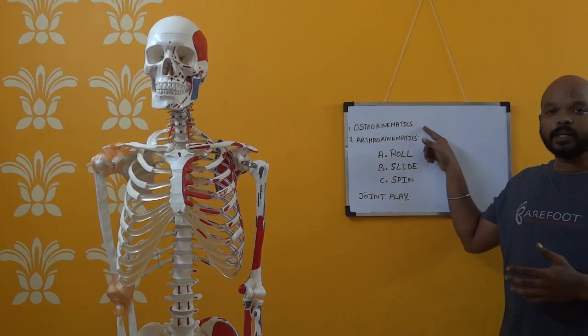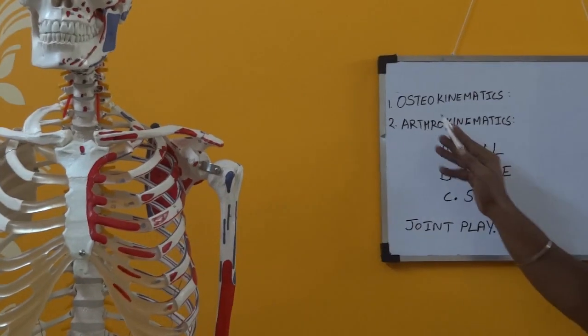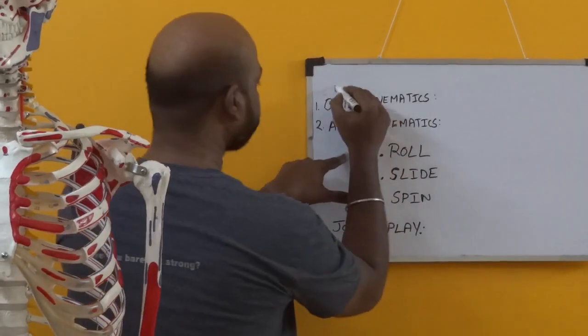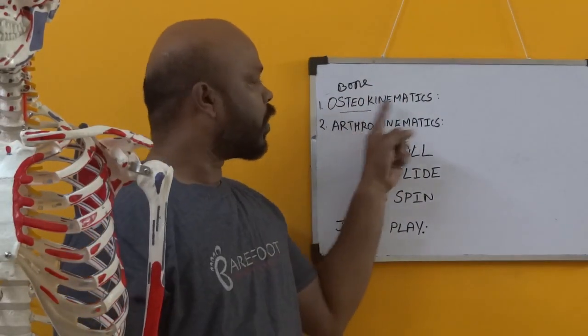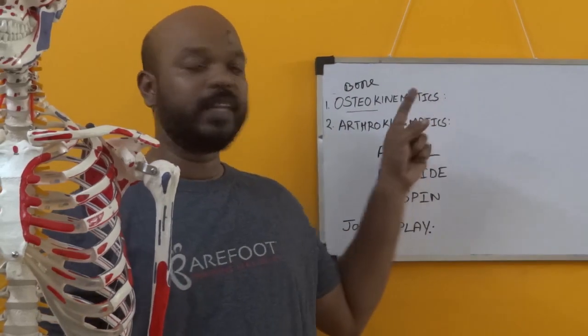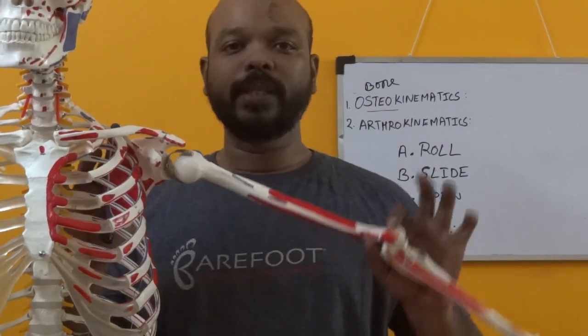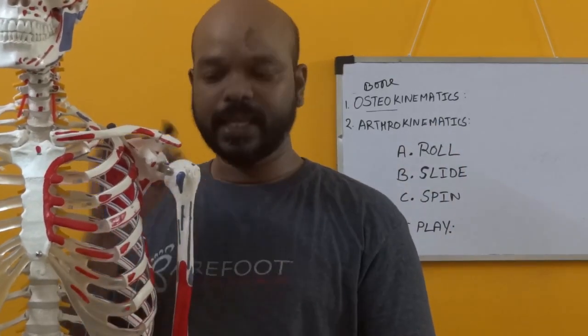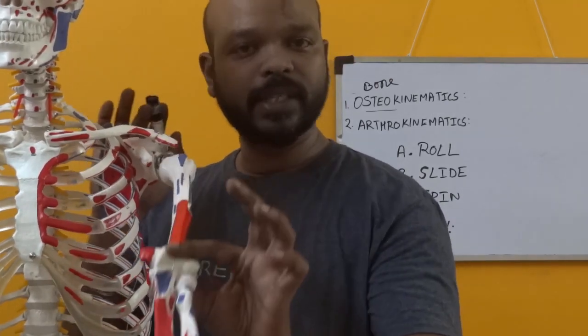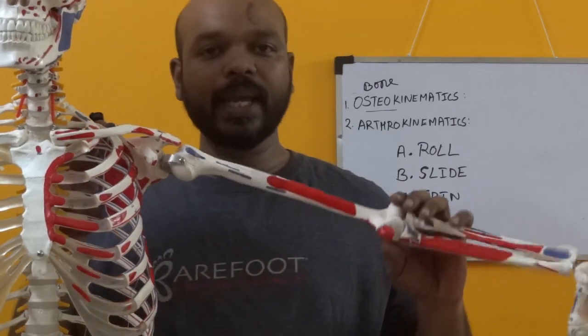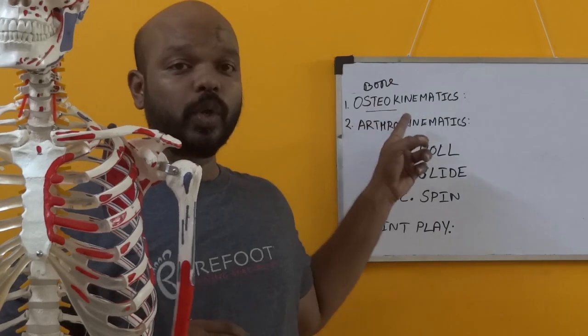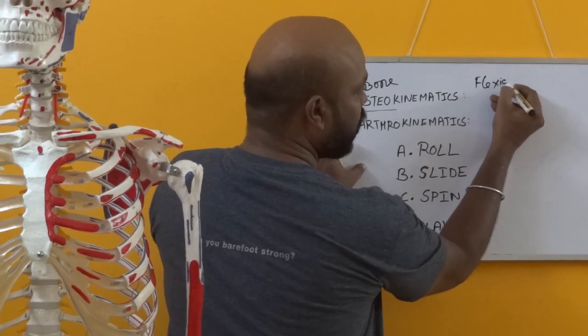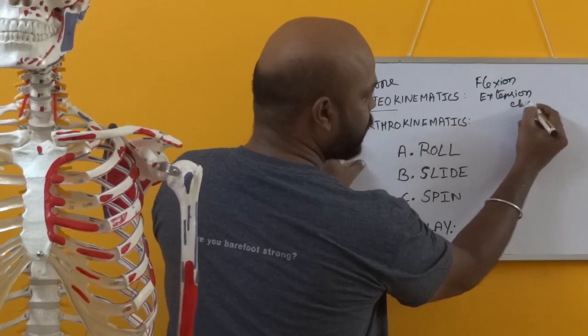Basically, a movement is defined as either osteokinematic or arthrokinematic. Osteo refers to bone, so osteokinematics is the definition of movement with regards to the bone itself. For example, when we move a segment of the body or a limb, we say it has to be either flexion, abduction, extension — terms related to the bone. For example, the humerus moving forward is flexion, moving back is extension, and away from the midline is abduction. That is osteokinematics.